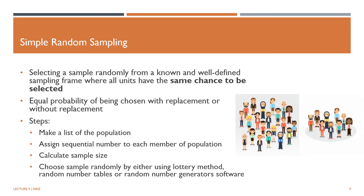Simple random sampling is called simple because all the researcher needs to do is assure that all members of the population are included in the sampling frame, and then randomly select the desired number of subjects. This method is used where the population is relatively small and the sampling frame is fairly complete. It ensures that every element in the population has an equal and independent chance of being chosen, and sampling is done in a single stage. Independent means that the selection of one element does not affect the selection of another.